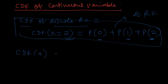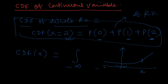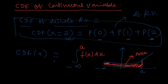For continuous variables the same concept continues. To calculate the CDF of point a, we take everything to the left of a. If we have a function going from minus infinity to plus infinity, the CDF of a is the area of the shaded region to the left of a, which is the integral of f(x)dx from minus infinity to a.